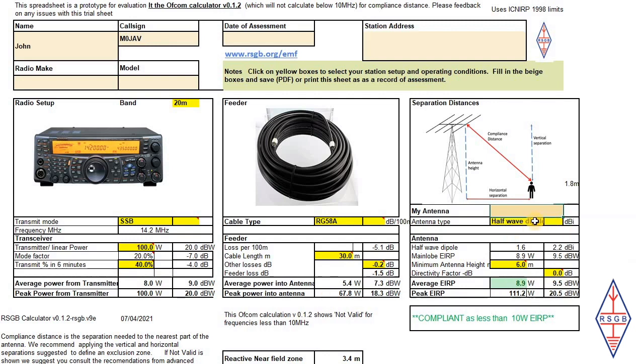What I next need to do is to select the antenna. I've used a half wave dipole, then it will automatically look up the gain of that half wave dipole and do the calculation. In this case, having subtracted the losses, added in the antenna gain, then I end up with an average EIRP from the antenna of 8.9 watts. EIRP stands for equivalent isotropic radiated power. That 8.9 watts is below the 10-watt limit that is set for needing to do detailed assessment. As a consequence, the calculator tells you that you are compliant as you are less than 10 watts EIRP.